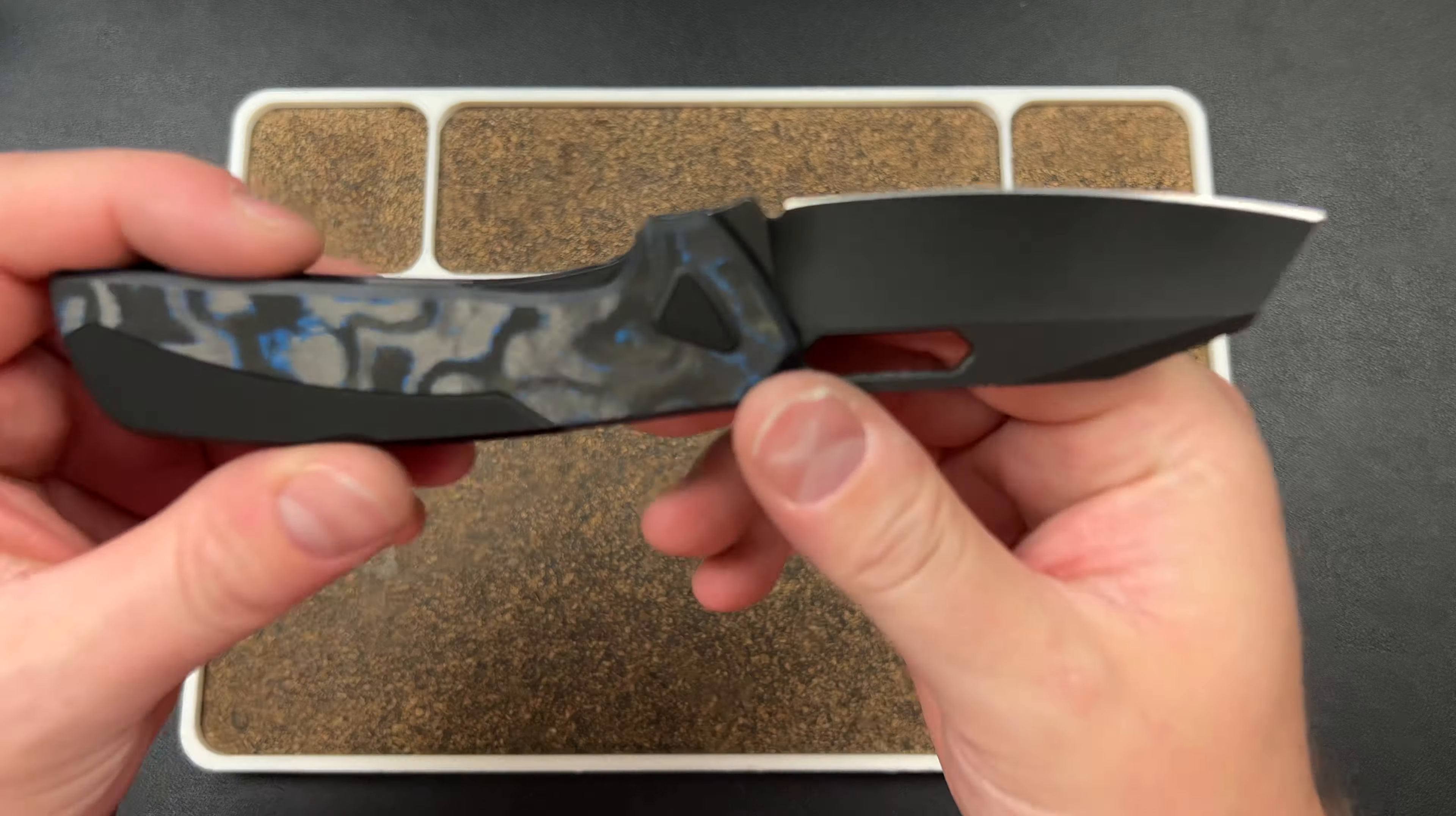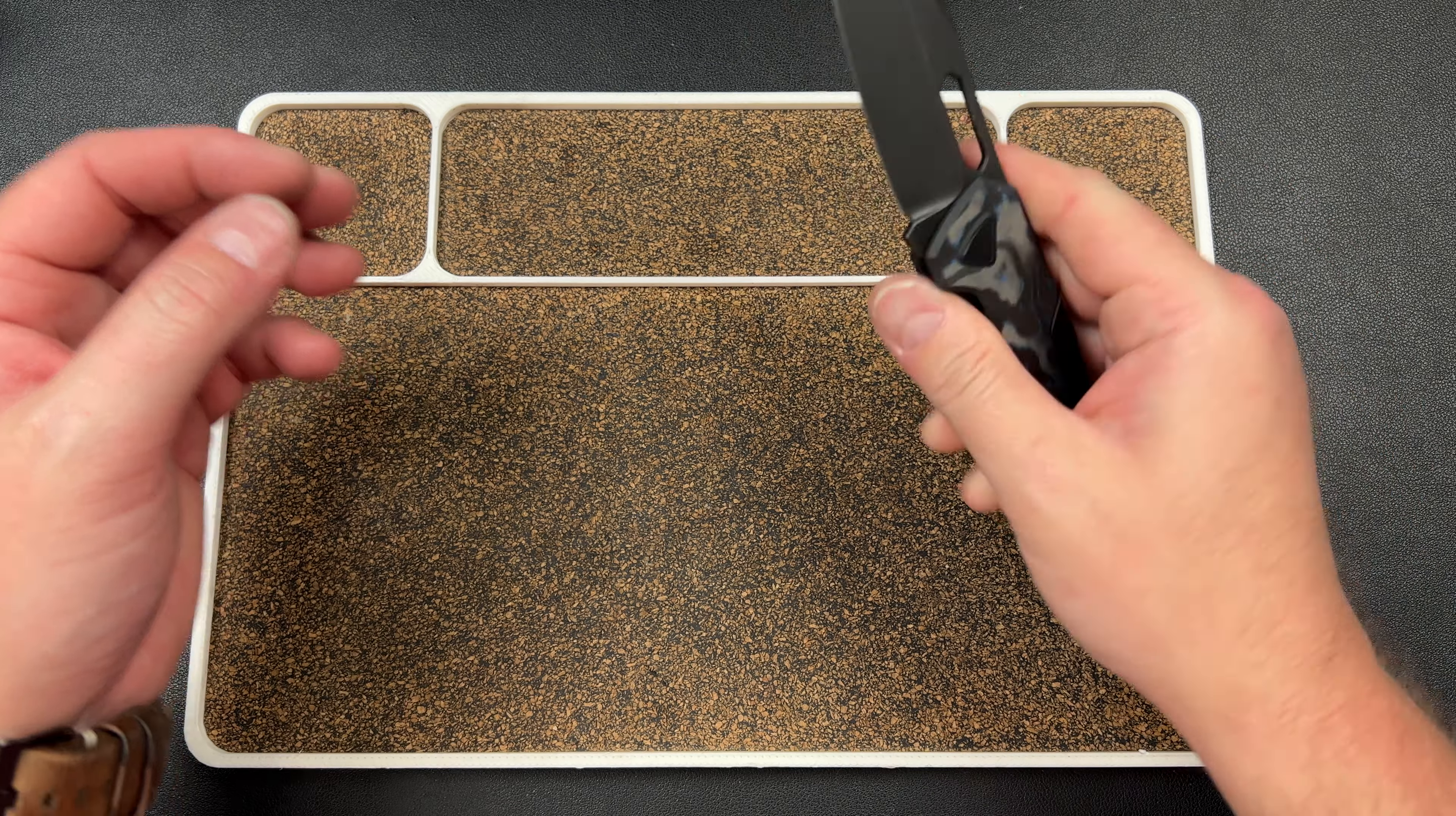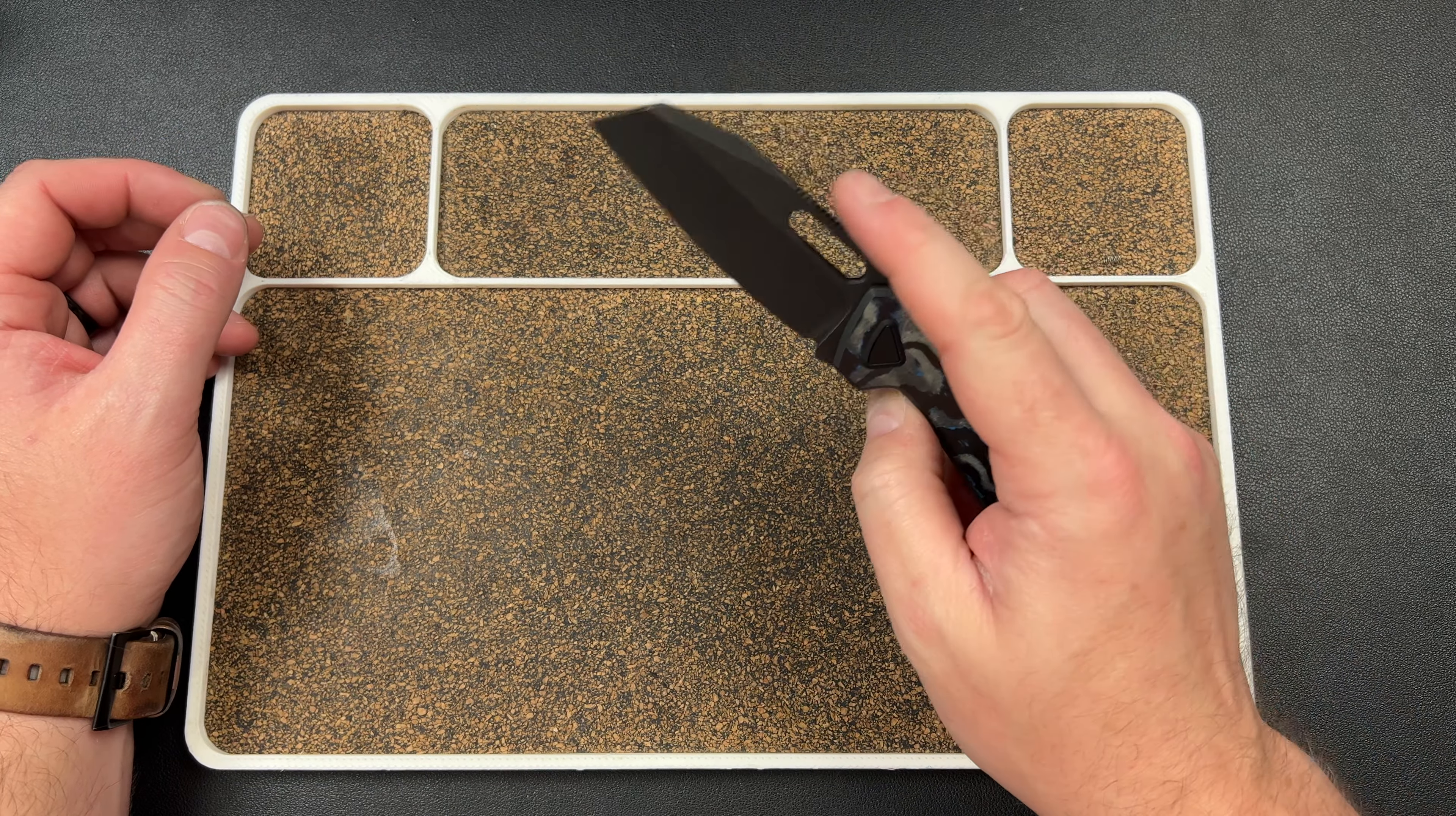I think what we would do is just do all black on the red one and then do a satin blade. That would tie it in nicely. We're gonna flatten this out so right now it's comfortable to hold, but if this was flat it would be really comfortable to choke up on it. The hollow grind feels great, nice thin slicey. The action, I mean the detents are incredible - drop shutty, thumb flicks great.